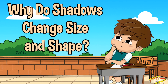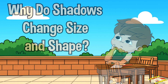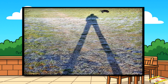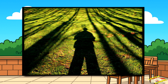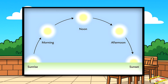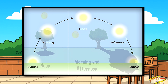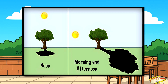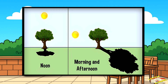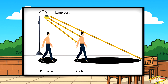Why do shadows change size and shape? Have you ever noticed that your shadow looks long in the morning and afternoon, but short at noon? That's because the sun changes its position in the sky during the day. In the morning and afternoon the sun is lower in the sky, so your shadow stretches and becomes longer. At noon the sun is high above, so your shadow is short and small. Your shadow changes depending on the angle of the light.